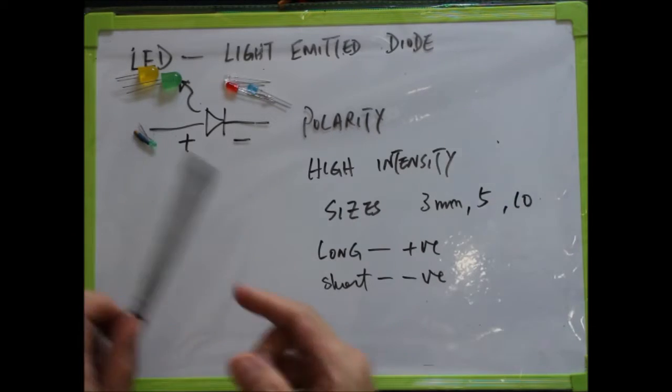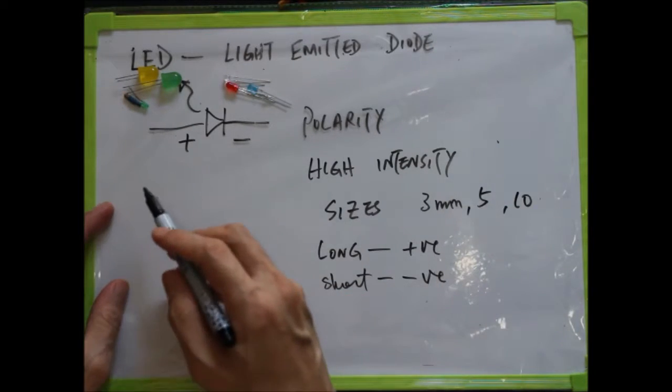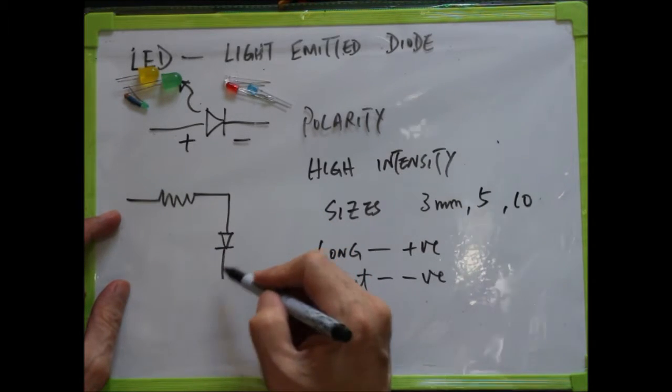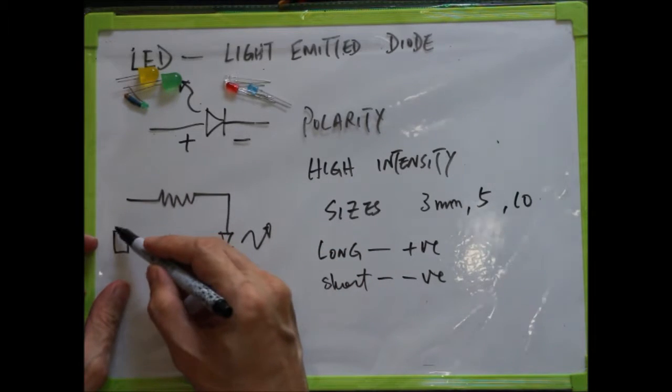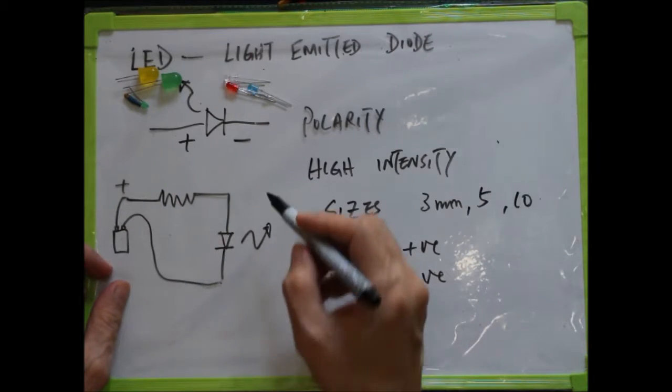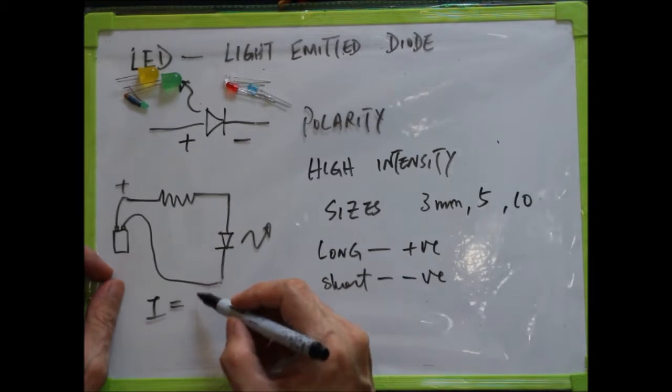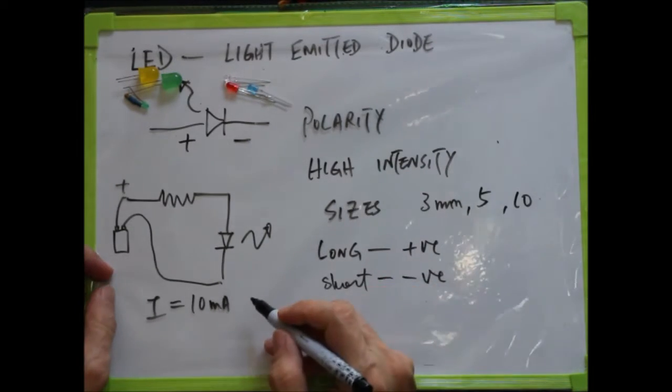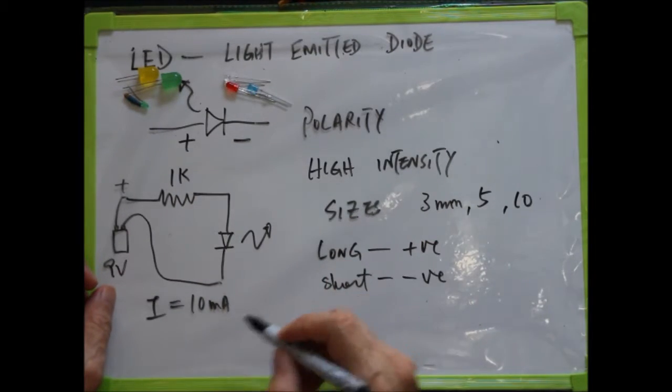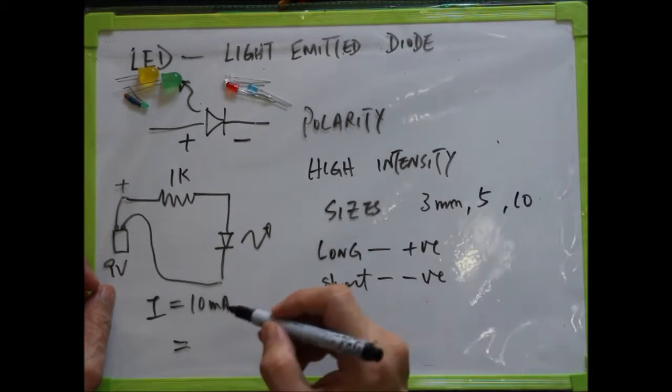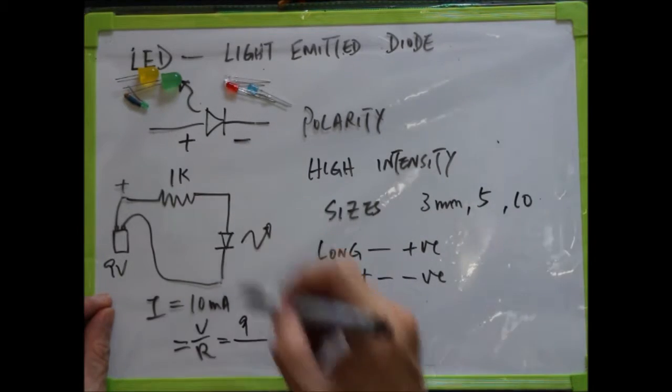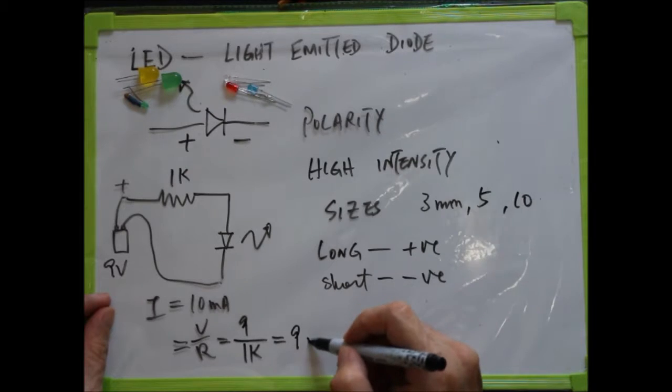Most of the time when we want to do an LED project, you need to put a resistor before the LED. Say we have a 9-volt battery with positive and negative terminals. The current for the LED is usually 10mA. Most of the time we will use a 1k resistor. The current equals V over R, right? So V is 9 volts, R is 1k, so the current will be 9mA.